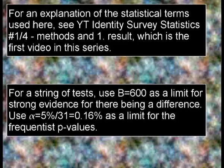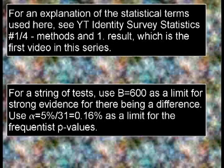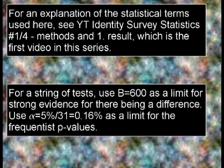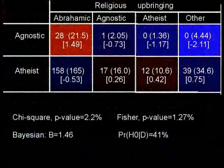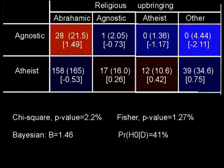I need to say that for a string of tests you need stronger evidence than you need for a standalone test. So I'm using a Bayes factor of 600 as a limit for deciding that there is a difference between the groups for a string of tests, and a frequentist significance level of 0.17% rather than the usual 5%. For the 31 different questions I looked at, I got 11 tests that indicated Bayesian evidence for dependence, and I'm going to go through them in climbing order, so the weakest indicators first.